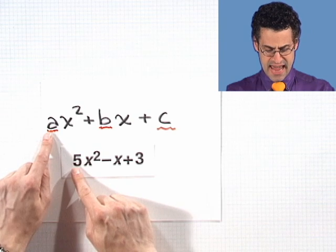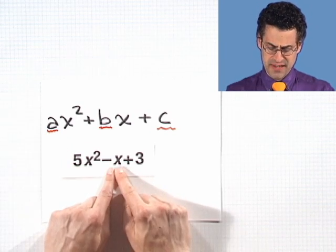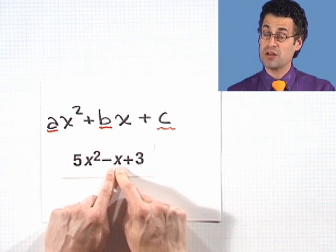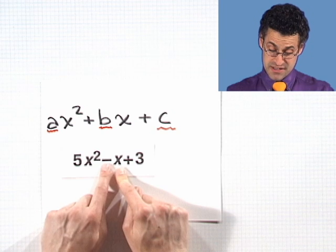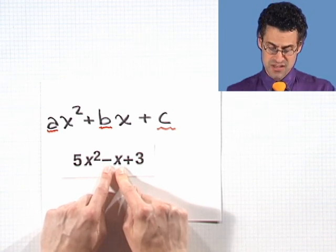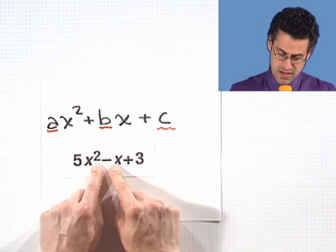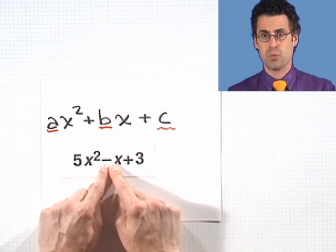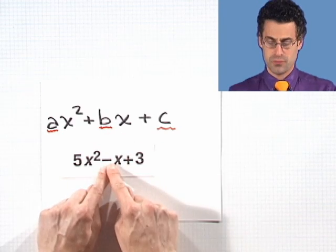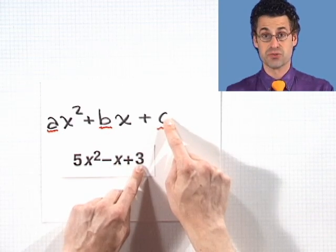How about this one? Here I see a is 3, b is 2, and c is going to be negative 4 — the negative sign goes to the constant. Here I see a is 5. Looks like there's nothing in front of the x, so you might guess 1, but that's wrong because of that minus sign. I have to interpret the minus sign as plus negative 1. So in fact, b is negative 1, and c is 3.